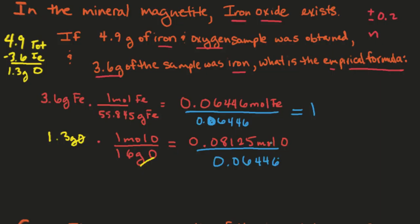So when you do that on a calculator, you get 0.08125 divided by 0.06446, and that gives you 1.26, which is just barely outside both of those ranges. When I learned it, it was plus or minus 0.1. They've even allowed it to go to 0.2, but this is 0.26. That's too far off.